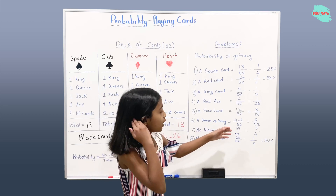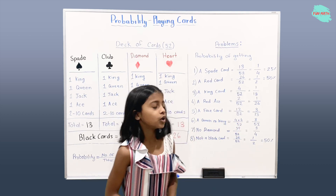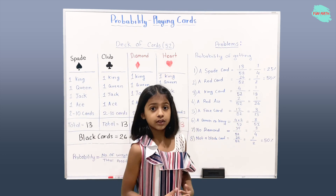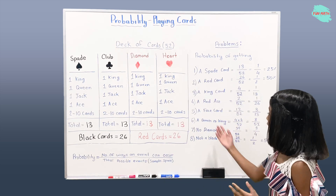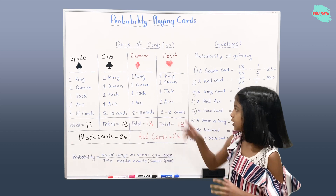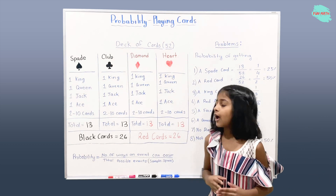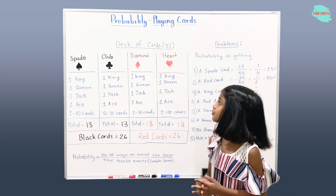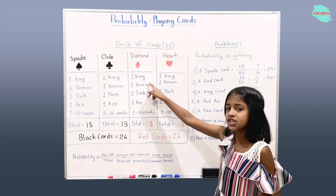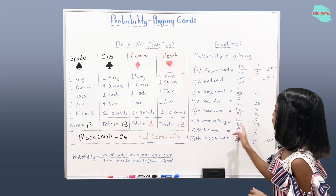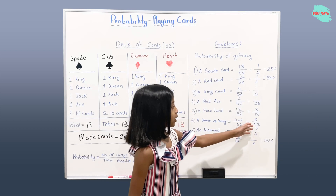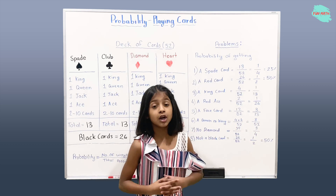Probability of getting a queen or king is 4 plus 4 over 52. We have 4 as the first part because there are 4 queens — one in each suit. We have plus 4 because there are 4 kings — one king in spades, one in clubs, one in diamonds, and one in hearts. So 4 plus 4 over 52 is 8 over 52.